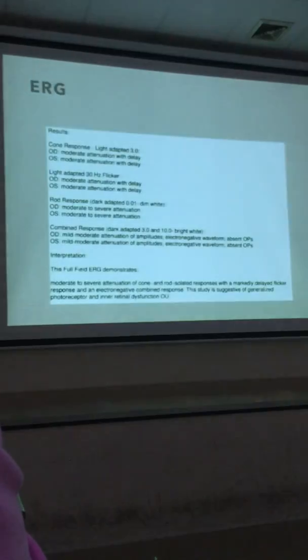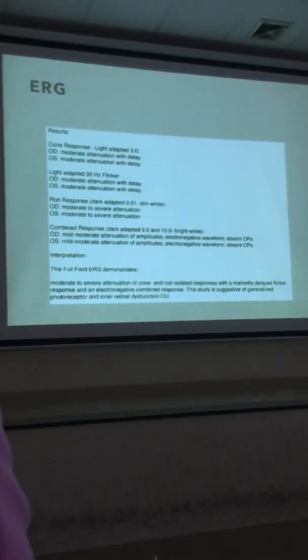The treatment plan was starting on oral prednisone, with the note that he's likely to need immunosuppressive therapy if he's HLA-A29-positive. We sent him to get an ERG and he already showed generalized photoreceptor dysfunction.